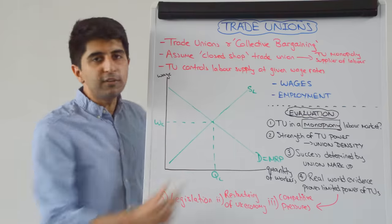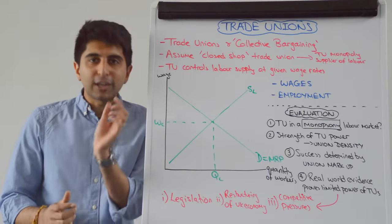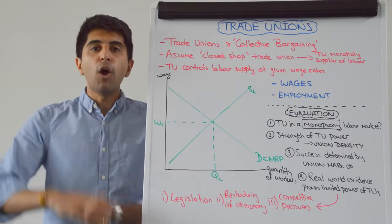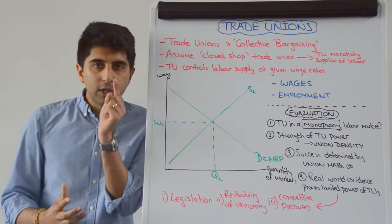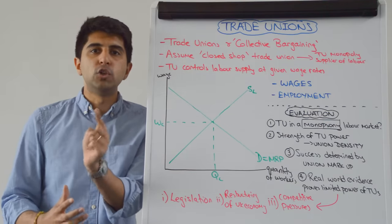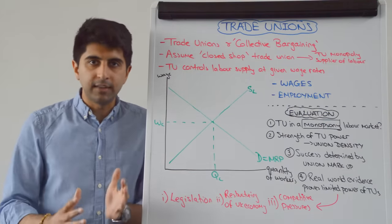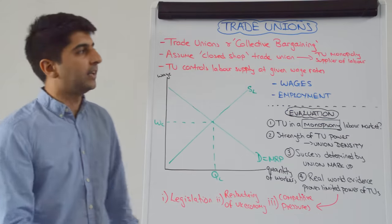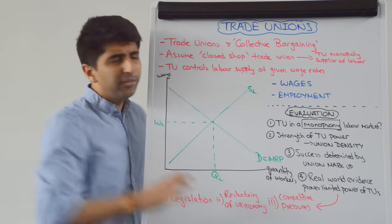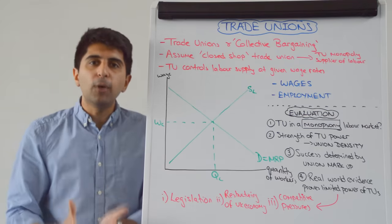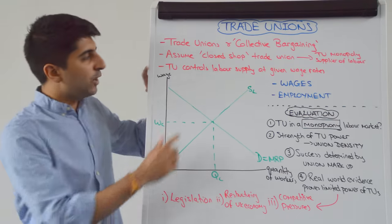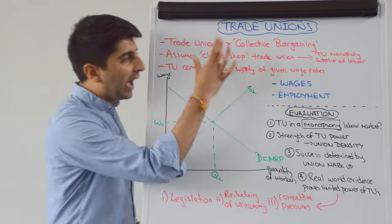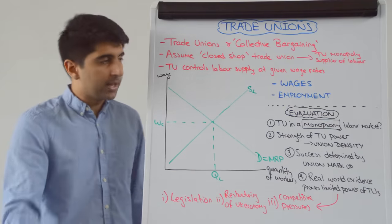We are going to assume in this video that the trade union is a closed shop trade union — i.e. that in a given profession all the workers are part of only one trade union. Other trade unions do not exist. One trade union has all the power and all the workers behind it. In that sense the trade union becomes a monopoly supplier of labour, controlling the labour supply at given wage rates.